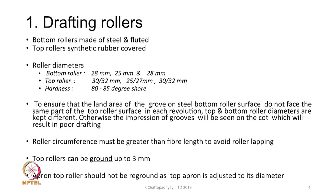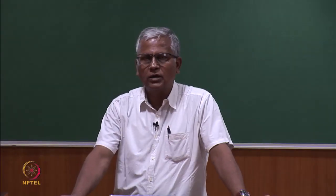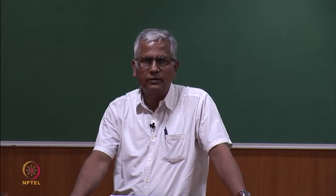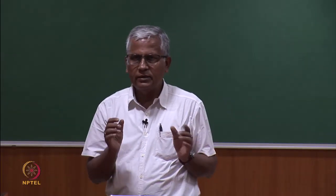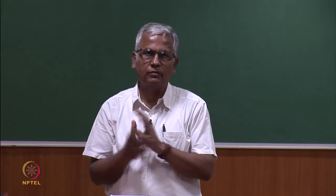We select the roller diameter so that the circumference exceeds fiber length. Larger diameter rollers mean less lapping possibility. The top rollers can be ground up to 3 mm. As they run continuously, the hardness of the rubber changes due to continuous friction and heat generated at the friction point, causing changes in the chemical composition of the rubber surface.